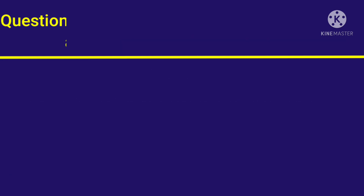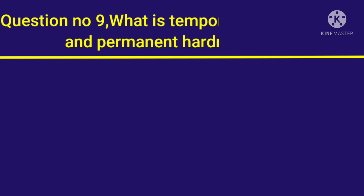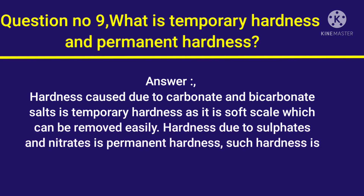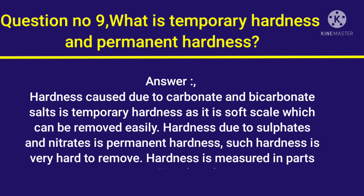Question number 9: What is temporary hardness and permanent hardness? Answer: Hardness caused due to carbonate and bicarbonate salts is temporary hardness, as it forms a soft scale which can be removed easily. Hardness due to sulfates and nitrates is permanent hardness, and such hardness is very hard to remove. Hardness is measured in parts per million (ppm).